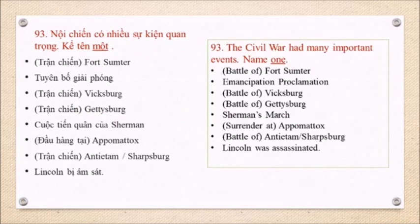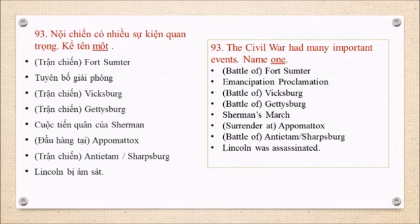Question 93: The Civil War had many important events. Name one. Battle of Fort Sumter. Emancipation Proclamation. Battle of Vicksburg. Battle of Gettysburg. Sherman's March. Surrender at Appomattox. Battle of Antietam-Sharpsburg. Lincoln was assassinated.